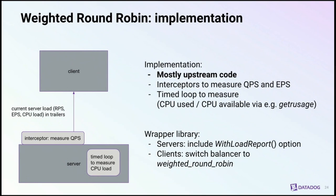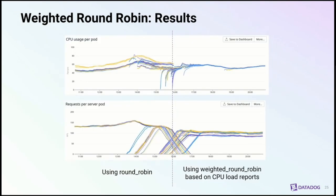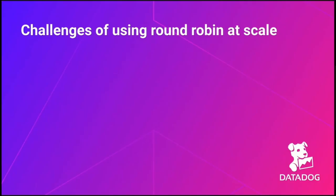We do this through our wrappers library, so it can be enabled by service owners through a simple boolean. The results have been very impressive: CPU usage after deploying load reports becomes completely balanced — a straight line — while the number of requests per pod now varies according to server performance. The nice thing about this feature is that it requires no coordination and no control plane — it's really easy to set up. Round robin is great for load balancing, but it does have some drawbacks worth looking into.